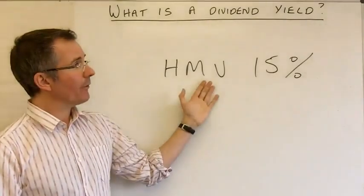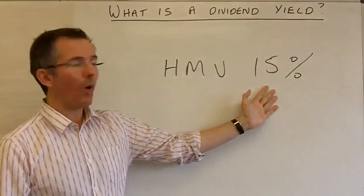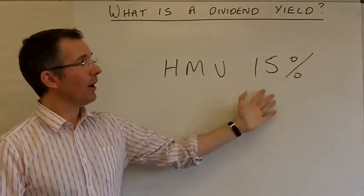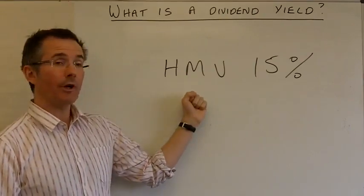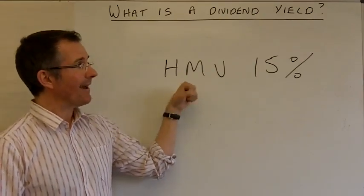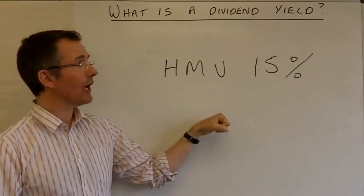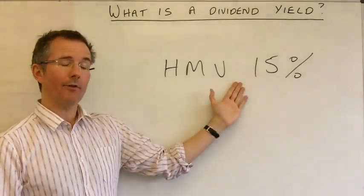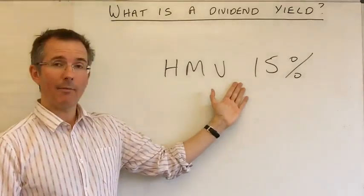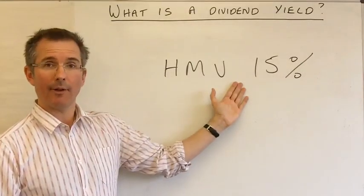So you have to ask yourself the question, what am I being offered and why? Is this a bit of a bribe to get me into HMV? Now, this could be the bargain of the century. Maybe the yield reflects a very low share price and a bargain share. But always be aware that there may be a risk sitting behind this 15%. Good rule of thumb in financial markets, you don't get something for nothing.